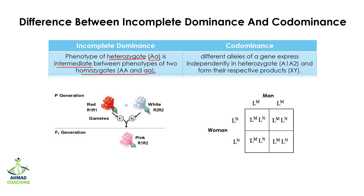For example, we have a red flower which is a homozygote and a white flower which is also a homozygote. When these two plants are crossed with each other, the heterozygote produced will have a pink color — a phenotype intermediate between the two homozygotes.